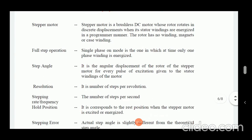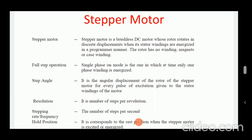Now we will see some important points regarding the stepper motor. The stepper motor is a brushless DC motor whose rotor rotates in discrete displacement when its stator windings are energized in a programmed manner. The rotor has no winding — it may have magnets or cage winding.